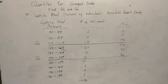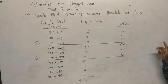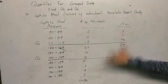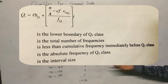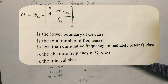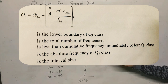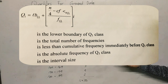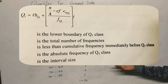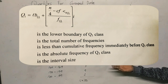Because we are working with quartiles now, we use n over 4 instead of n over 2. So the formula we will use is: Q sub 1 is equal to the lower boundary of Q sub 1, plus the quantity n over 4 minus the cumulative frequency below Q1, all over the frequency of the Q1 class.